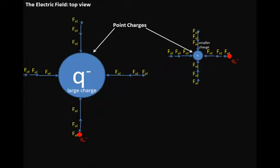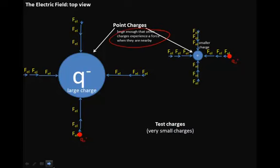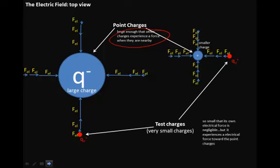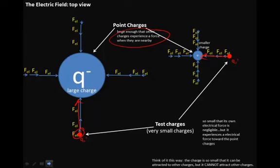We consider these large charges to be what we call point charges — they're large enough that other charges experience a force when they are nearby. We call these other charges test charges, or very small charges, similar to the person in our previous example. They're so small that their own electrical force is negligible, but large enough that they experience an electrical force towards the point charges. The charge is so small that it can be attracted to other charges, but it itself cannot attract other charges.